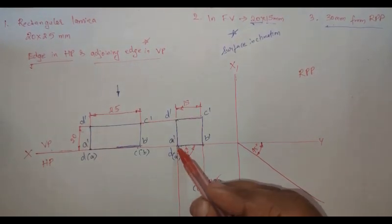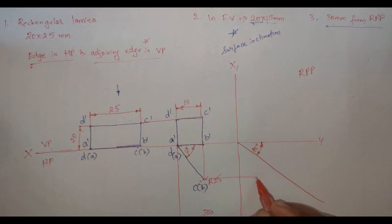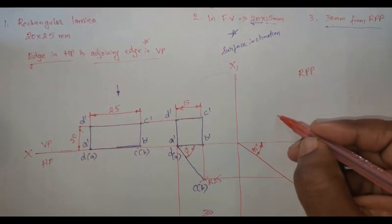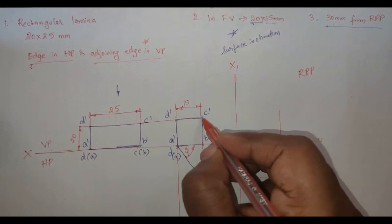Adjoining it is in VP, adjoining HP. So project it till 45 degrees. It enters at 45 and moves it upside.